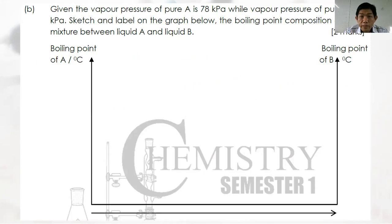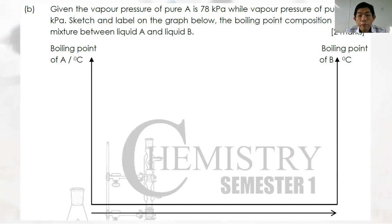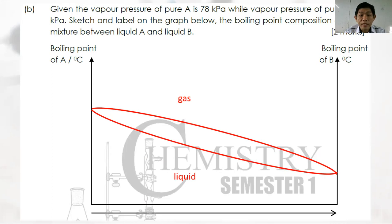Question 1b: Vapor pressures of pure A and pure B are 78 and 90 kPa respectively. Sketch and label the boiling point composition curve. Since vapor pressure of B is higher, B has a lower boiling point, so B is on the lower left end of the curve and A is higher. Label the region above the curve as gas and below as liquid, with the region in between as liquid-gas equilibrium.